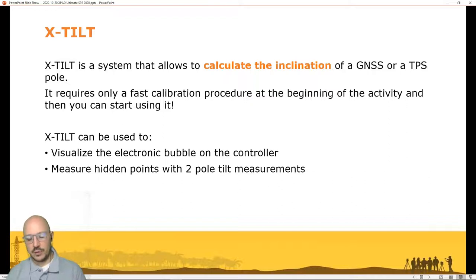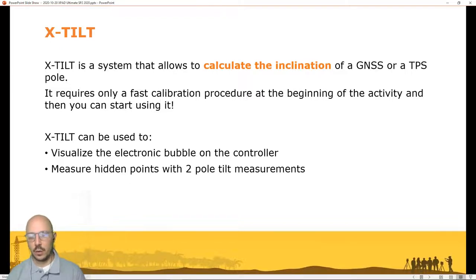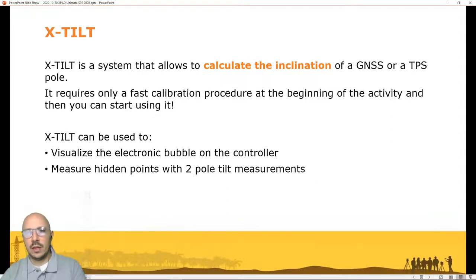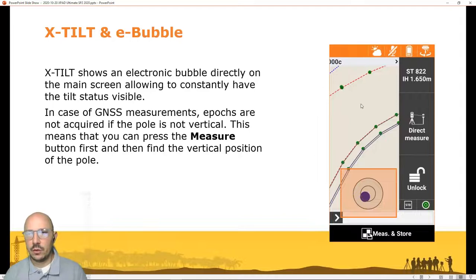X Tilt requires a very fast calibration. It is not influenced by magnetic field or other interferences. We can use it for two different functions: first, we can visualize the electronic bubble on the controller — so with a GPS or total station we can visualize the bubble of the pole directly on the survey or stakeout page instead of looking at the bubble on the pole. Second, and probably the most interesting, we can measure a point with two tilted pole measurements.